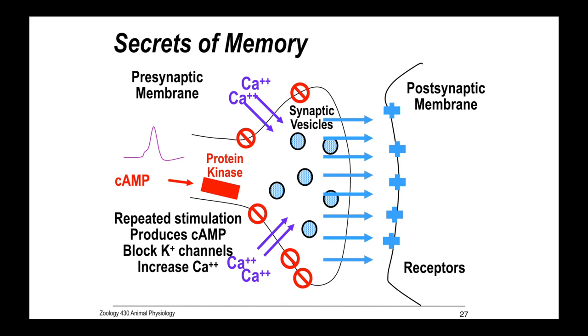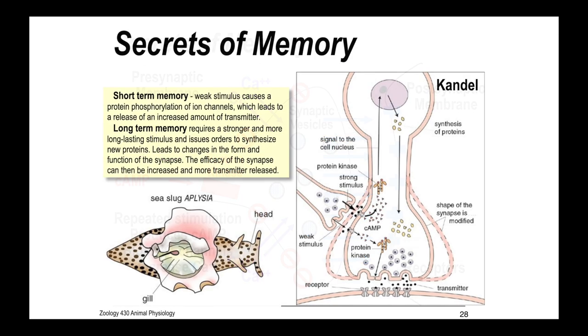The Nobel Prize in Physiology or Medicine in 2000 was awarded jointly to Arvid Carlson, Paul Greengard, and Eric Kandel for their discoveries concerning signal transduction in the nervous system. Kandel studied the sea slug, and he discovered that the efficiency of synapses can be modified by molecular and morphological changes, and that these are important in learning and memory. He discovered that a weak stimulus causes a protein phosphorylation of ion channels, which leads to increased neurotransmitter.